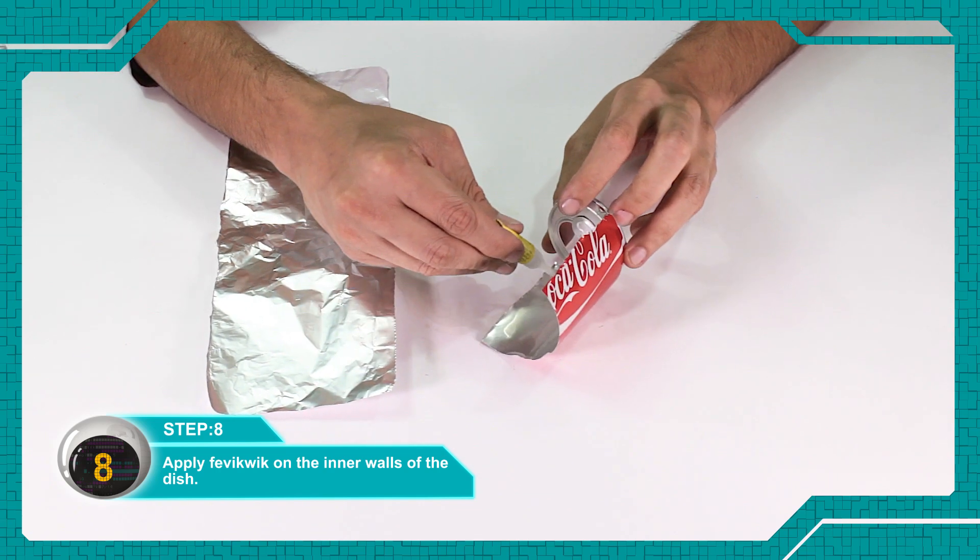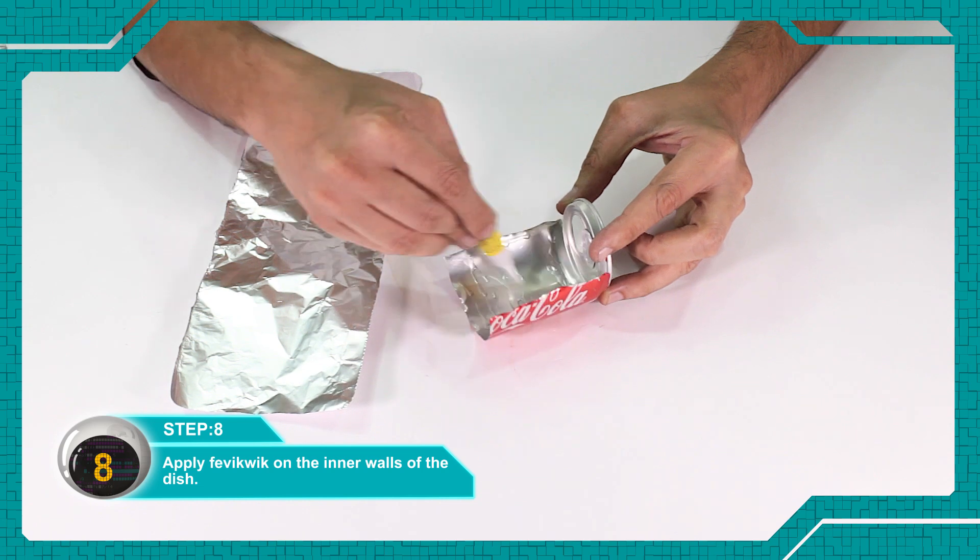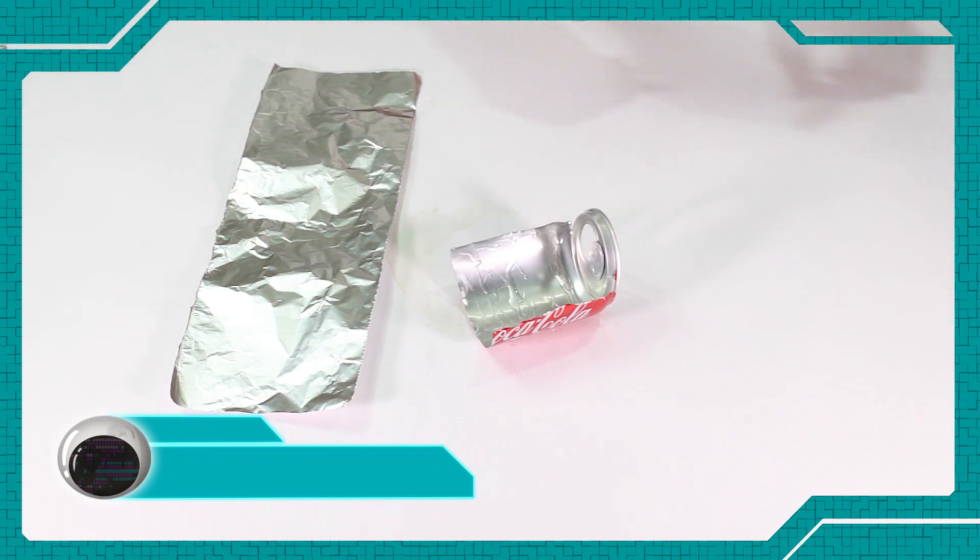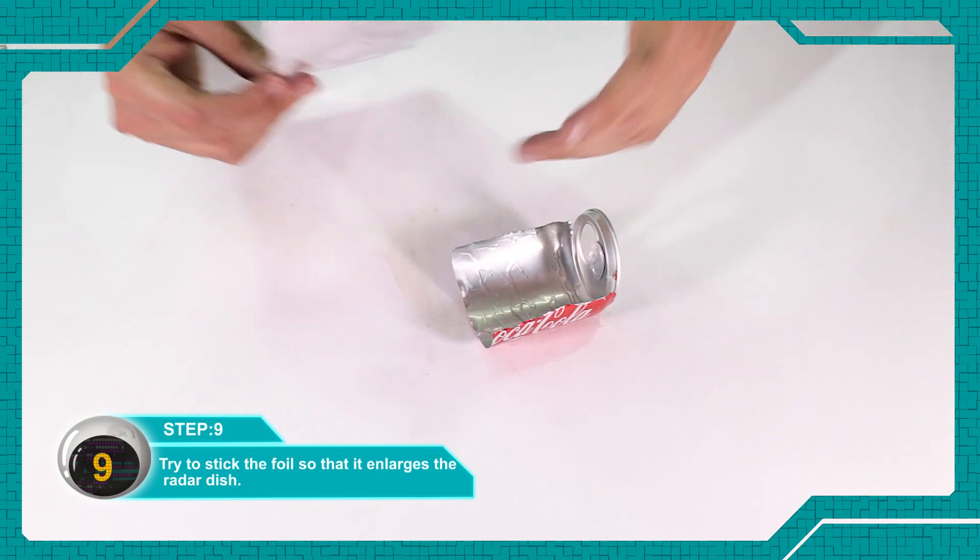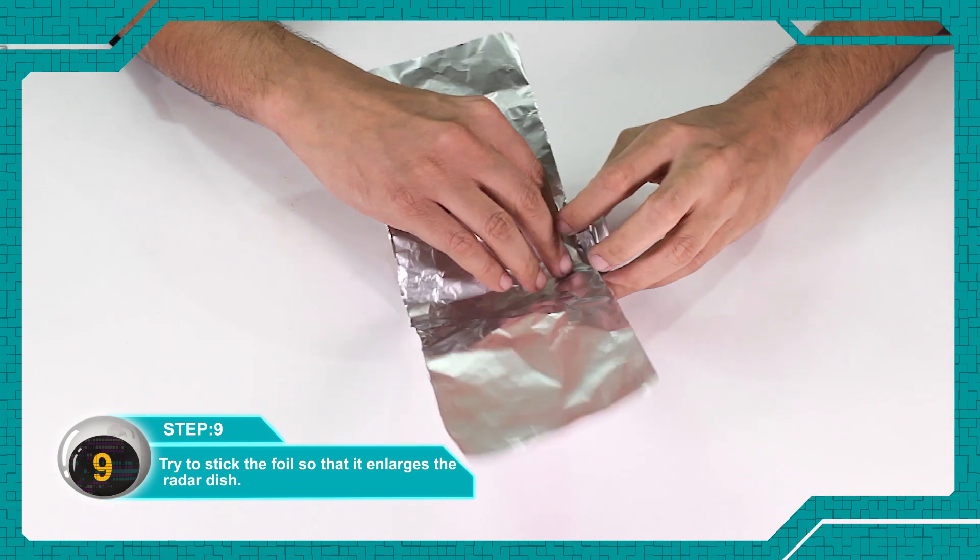Apply Feviquick to the inner walls of the dish. Stick the foil to the radar dish so that its size increases.